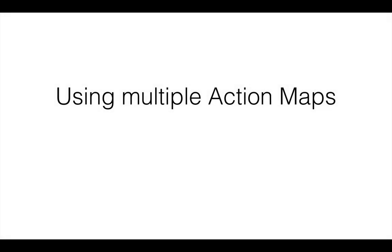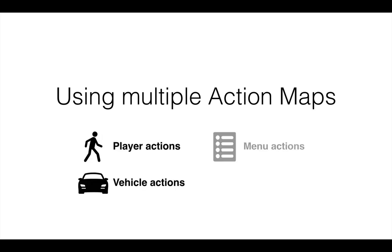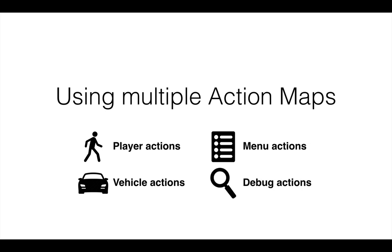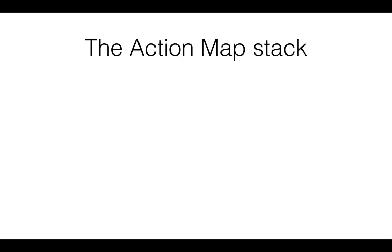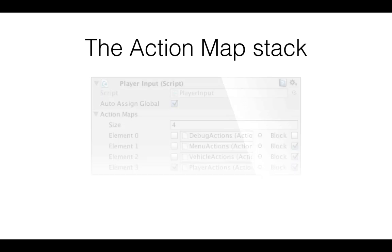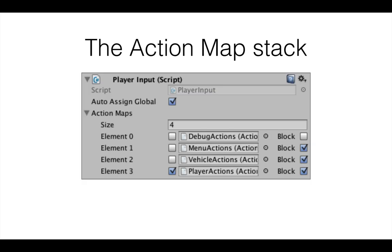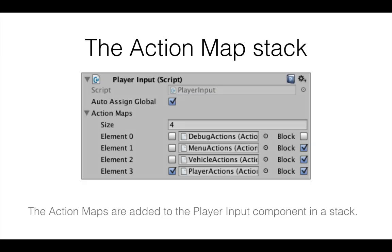If we want to use multiple action maps — such as player actions, vehicle actions, menu actions, and debug actions — let's look at how that works. We have something called the action map stack. In the player input component you can reference multiple action maps, and they are added to that component in a stack.